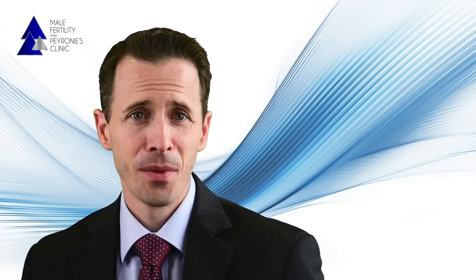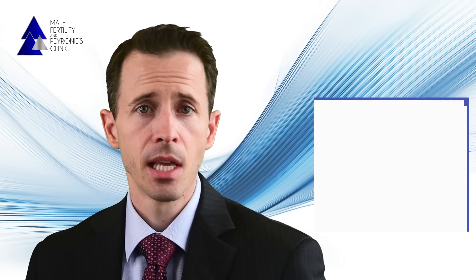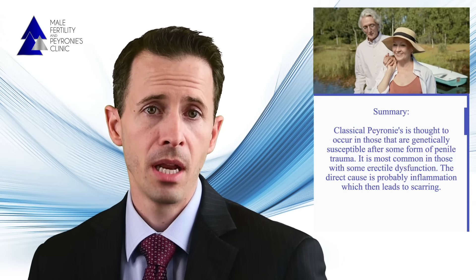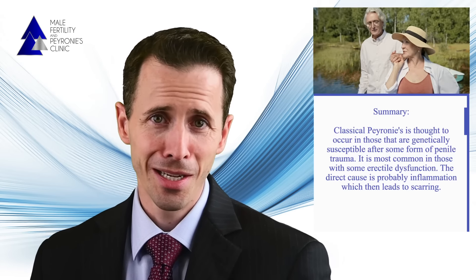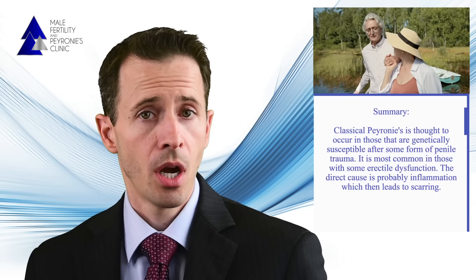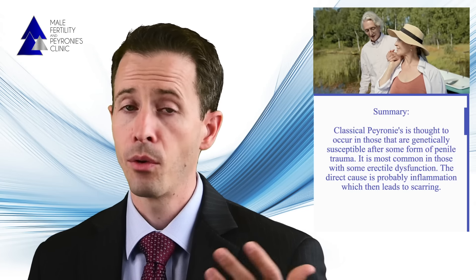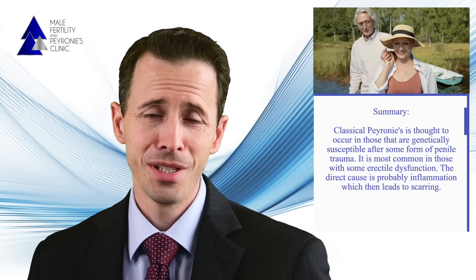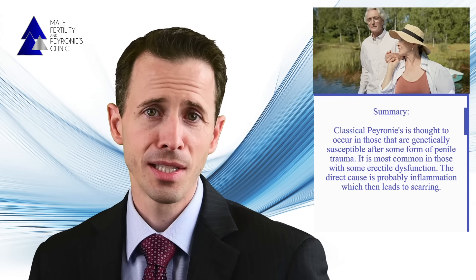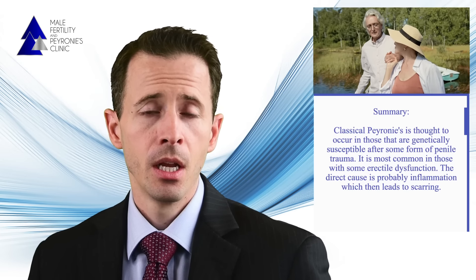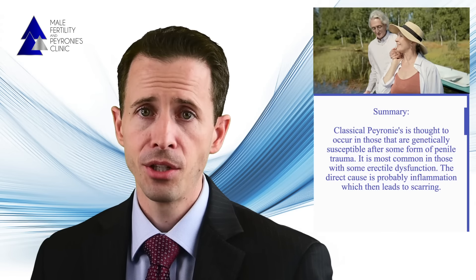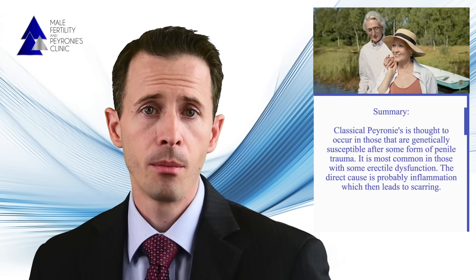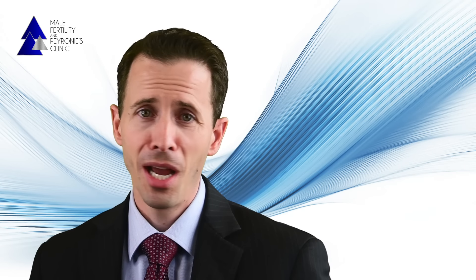To summarize, classical Peyronie's disease is thought to occur in genetically susceptible people after experiencing some form of penile trauma, even if it's not recognized. It most commonly occurs in individuals who have a degree of erectile dysfunction, whether due to normal aging or from conditions such as diabetes or following prostate surgery. The direct cause is probably inflammation leading to scarring, and this inflammation can occur from either repeated microtrauma, a benign tumor, or both.